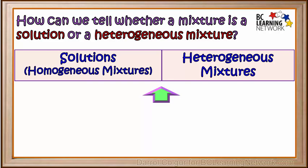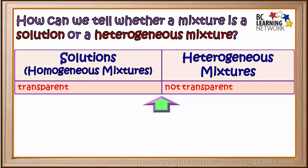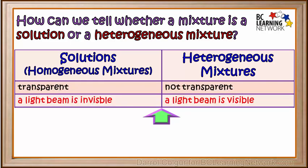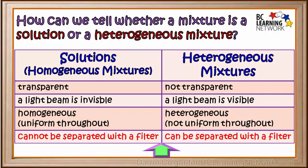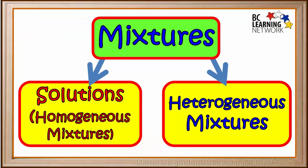We'll quickly summarize the main differences between solutions and heterogeneous mixtures. Solutions are usually transparent, while heterogeneous mixtures are not transparent. A beam of light is invisible as it passes through a solution, but it's visible as it passes through a heterogeneous mixture. A solution is homogeneous or uniform throughout, while a heterogeneous mixture is not uniform throughout. And finally, a solution cannot be separated using an ordinary paper filter, but a heterogeneous mixture can. We hope that this has helped you to understand the difference between solutions and heterogeneous mixtures.